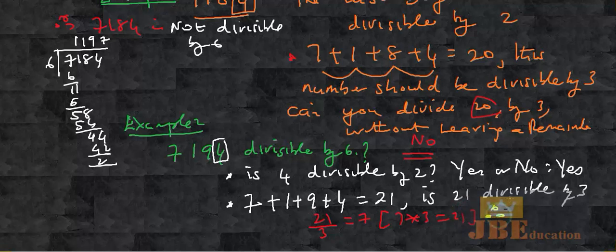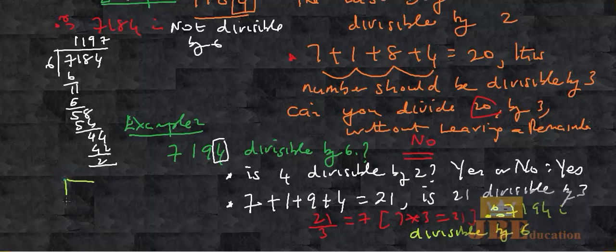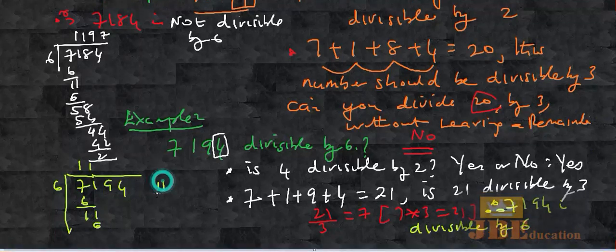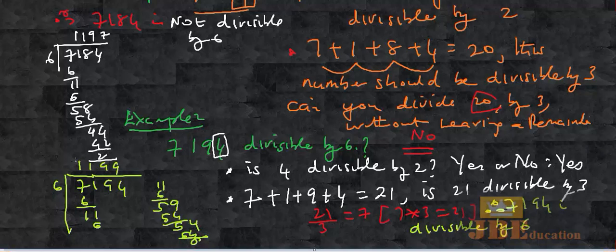Therefore 7194 is divisible by 6. I can show it here by long division: 6 divides 7194 — 6 goes into 7 once, remainder 1; 6 goes into 11 once; bring the 9 down; 6 times 9 is 54; bring the 4, giving 54 — remainder 0. So clearly 7194 is divisible by 6.